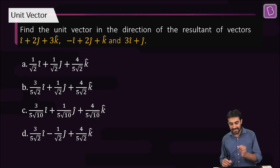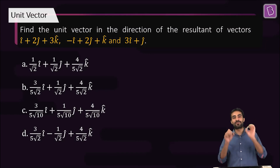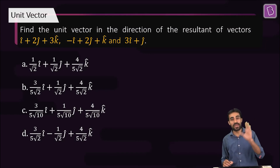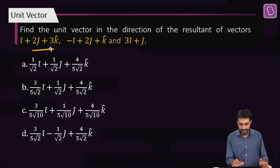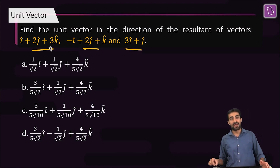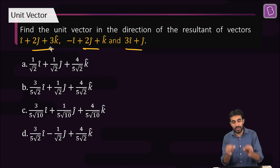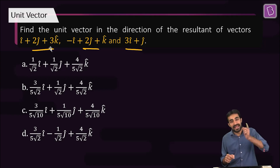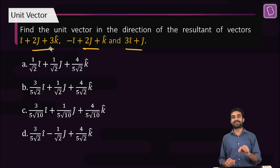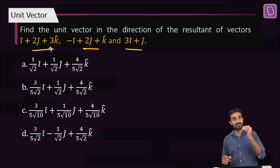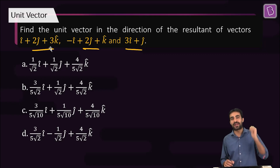Find the unit vector in the direction of the resultant of the vectors. We have three vectors: vector one, vector two, and vector three. We have to add them, find the resultant, and then find the unit vector in the direction of that resultant. So let's find the resultant first and then find the unit vector along it.